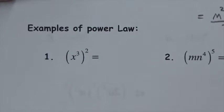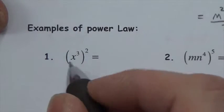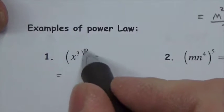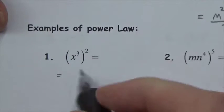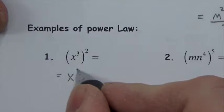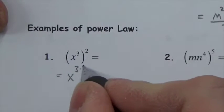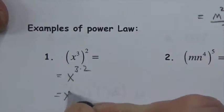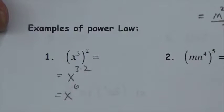Examples of the power law: x cubed squared — power of a power means multiply the exponents, so 3 times 2 gives x to the sixth.